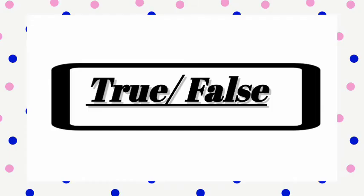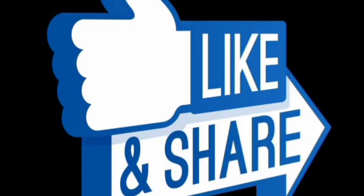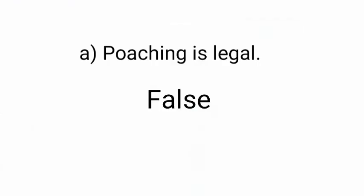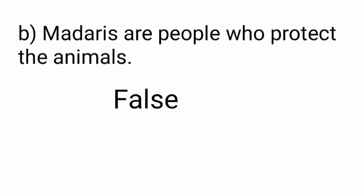Now we will start with True or False. First question: Poaching is legal. This sentence is false — poaching is illegal.